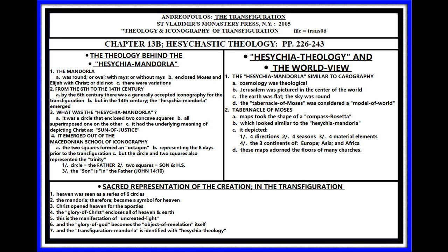It emerged out of the Macedonian school of iconography. The two squares formed an octagon, and that represented the eight days prior to the Transfiguration. But it also represented the Trinity: the circle is the Father, and the two squares represent the Son and the Holy Spirit. Because we know from the Gospel of John, the Son is in the Father — John 14:10.